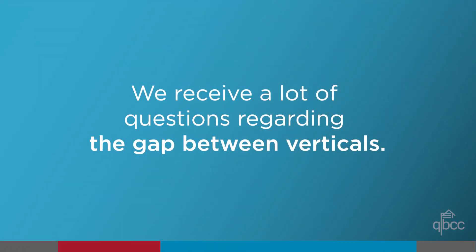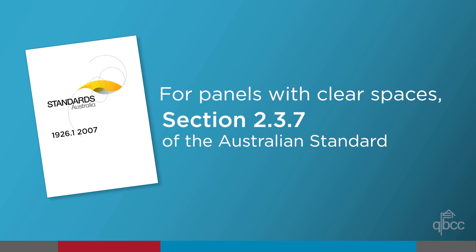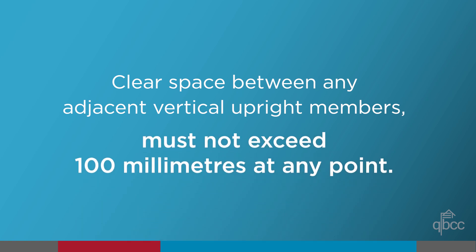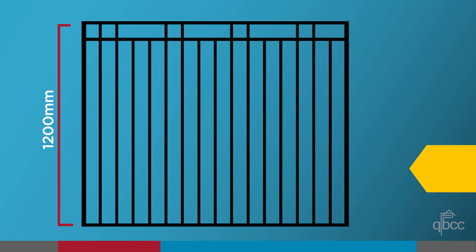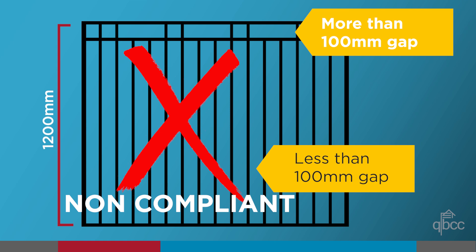We receive a lot of questions regarding the gap between verticals, particularly at the top of a barrier. For panels with clear spaces, section 2.3.7 of the Australian Standard 1926.1 requires the clear space between any adjacent vertical upright members must not exceed 100 millimetres at any point. If the gap exceeds 100 millimetres with no forces applied, it is non-compliant.